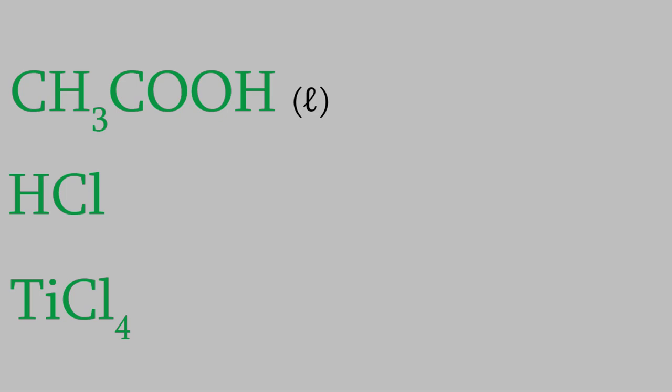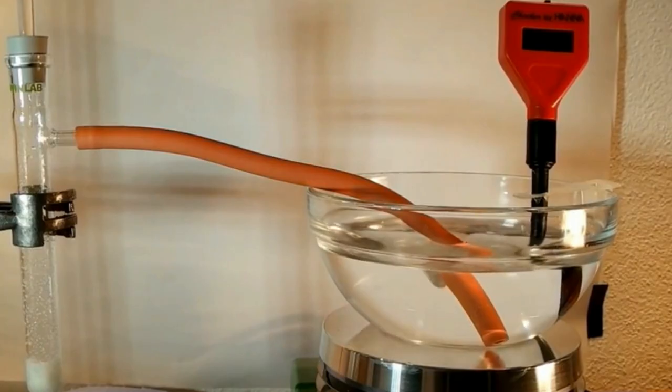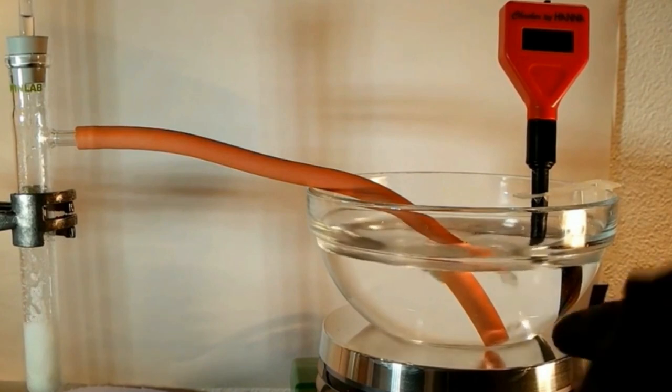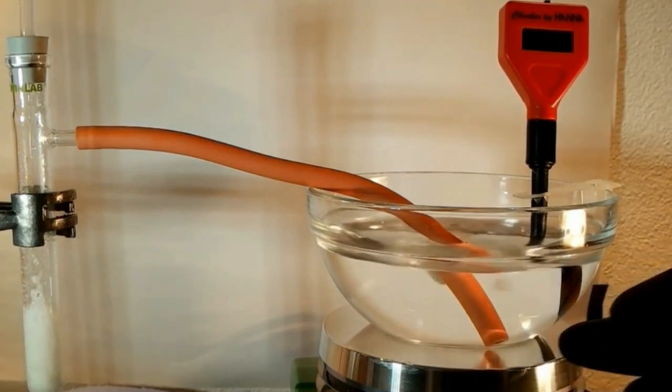You might also think that HCl is a liquid, since you've seen hydrochloric acid in lab many times, but HCl is actually a gas at room temperature. The hydrochloric acid you've used in class is actually HCl gas dissolved in water. Even HCl solutions that are very high concentration are mostly water.